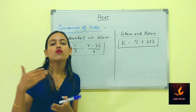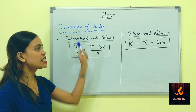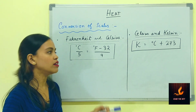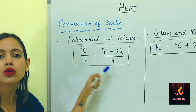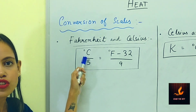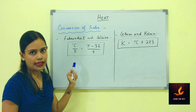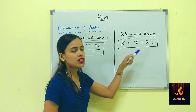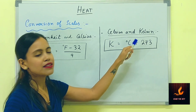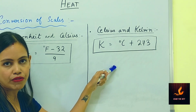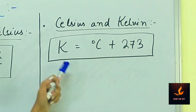To convert between temperature scales: Fahrenheit and Celsius can be interconverted using the formula C/5 = (F − 32)/9. To convert between Celsius and Kelvin, the formula is K = °C + 273. Using these formulas you can convert a temperature given in one scale into the other.